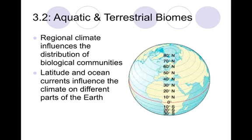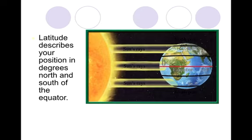There are two different types of biomes we want to talk about: aquatic and terrestrial biomes. Biomes are influenced by the region they are in on the earth, and that has to do with their latitude and their ocean currents. These will influence the climate of different parts of the earth. The closer you are to the equator, the warmer it's going to be. Ocean currents — bodies of water can cool and warm land masses, and latitude describes our position in degrees north and south of the equator, which will also affect the amount of sun that regions get throughout the year.